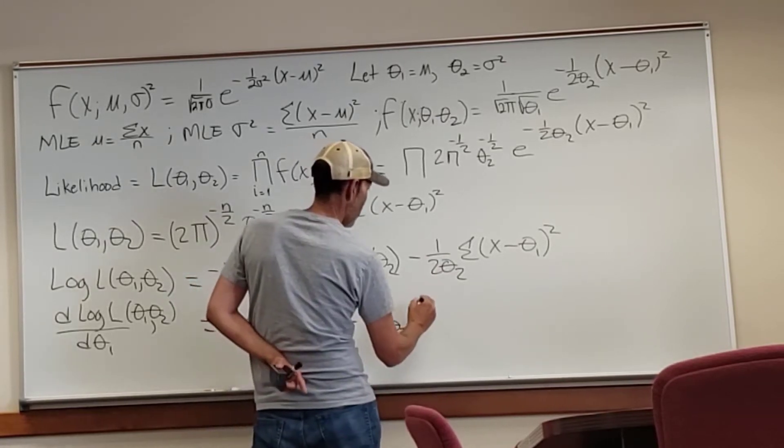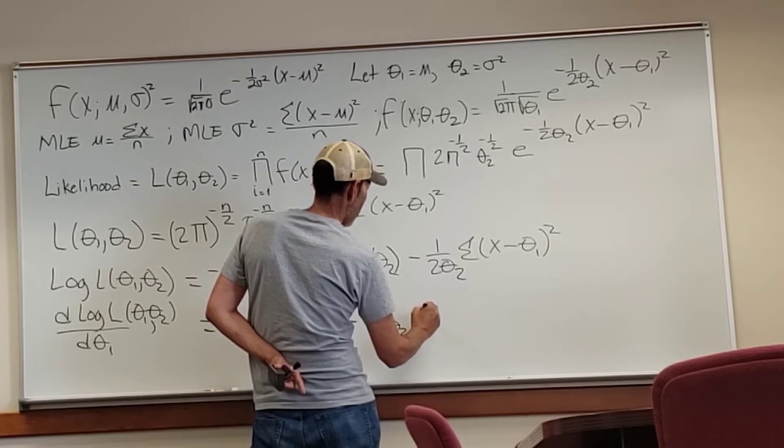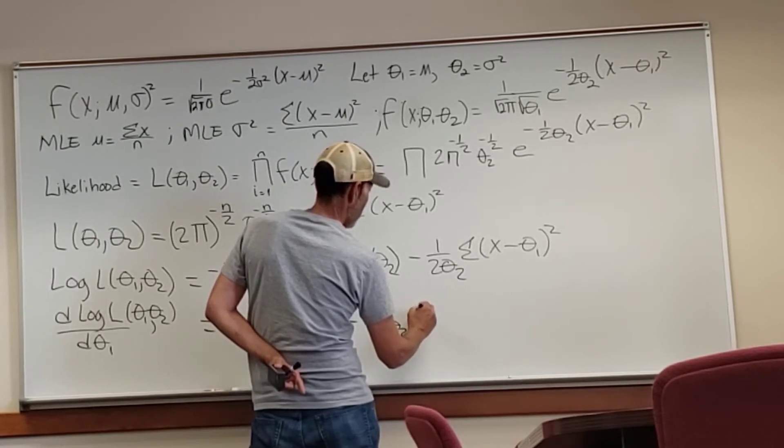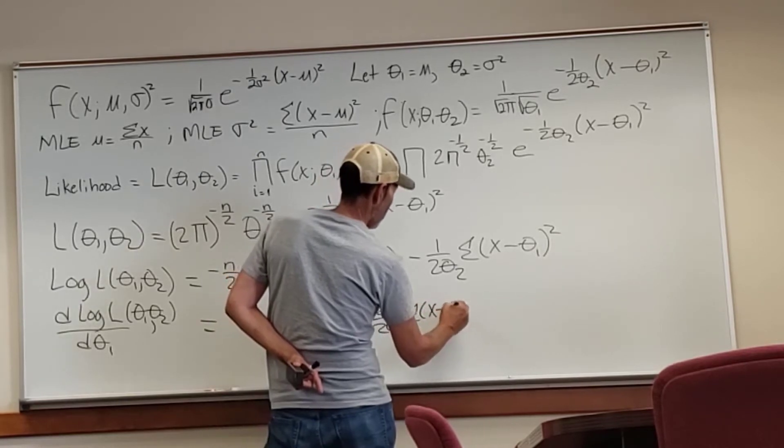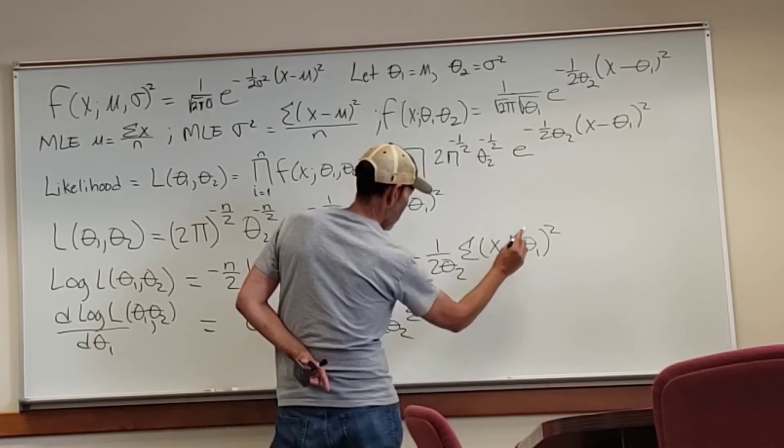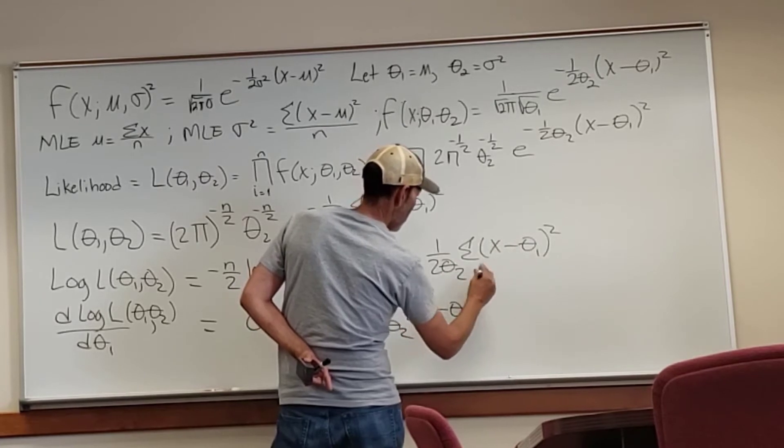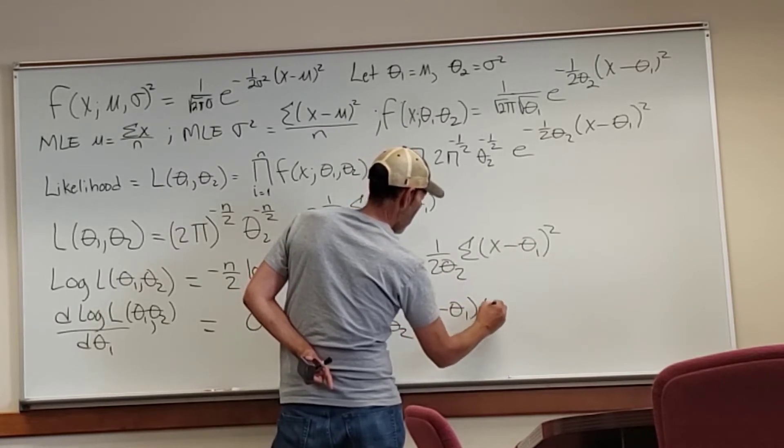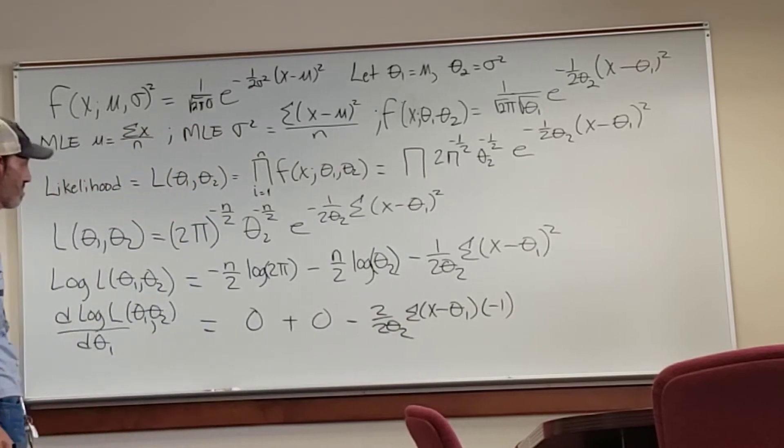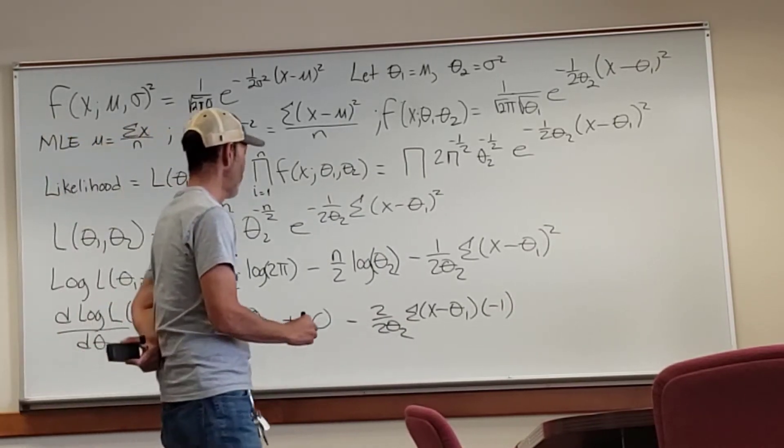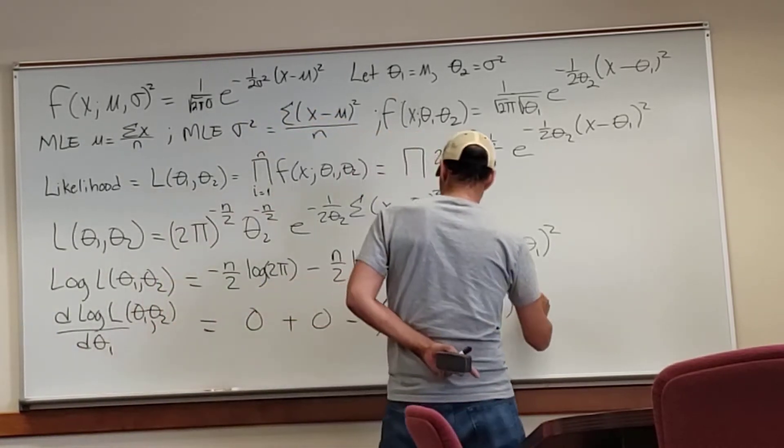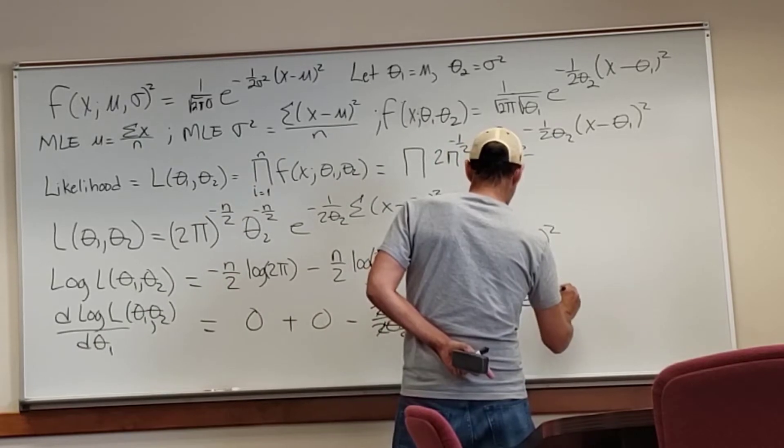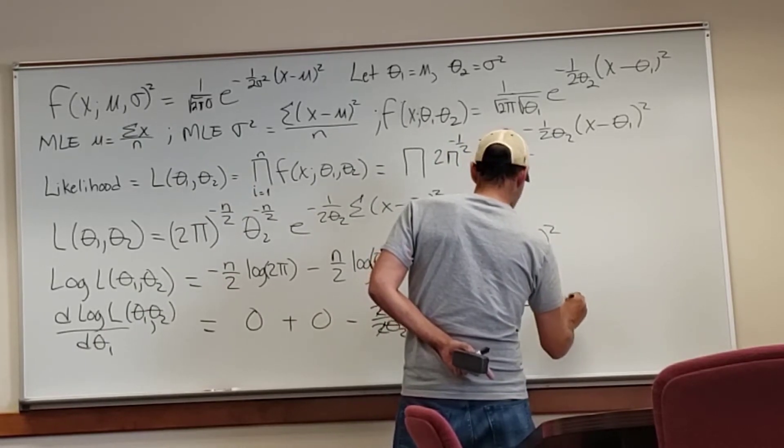So it's going to be minus 1 over theta 1. It's going to be 2 minus 1, which is 1. And then the negative 1. So you'll see this is actually quite beautiful. So we get 2 divided by 2 theta 2. So the 2s cross out.